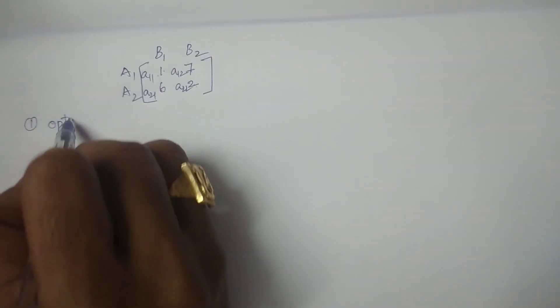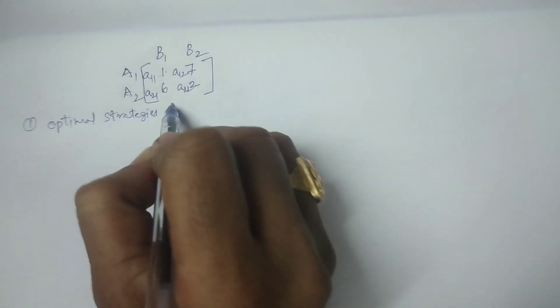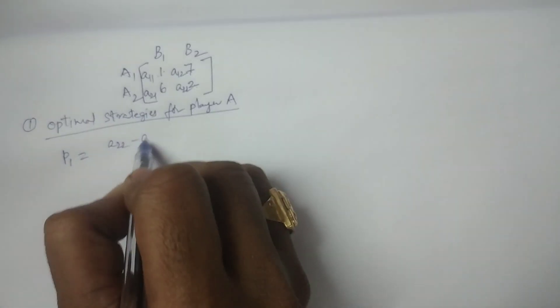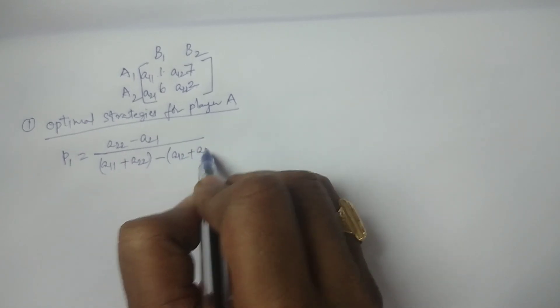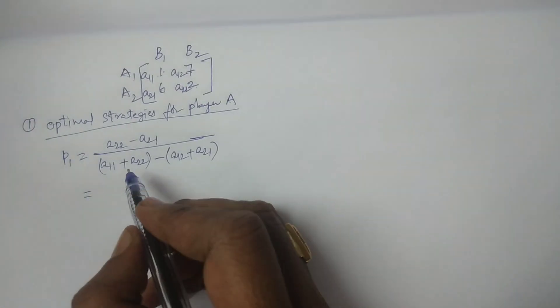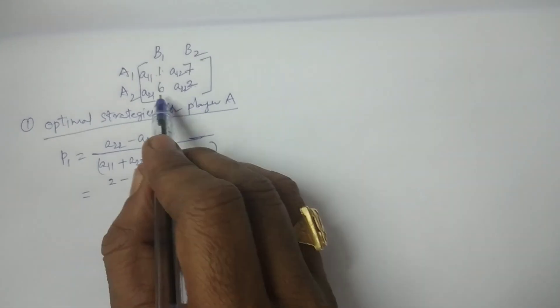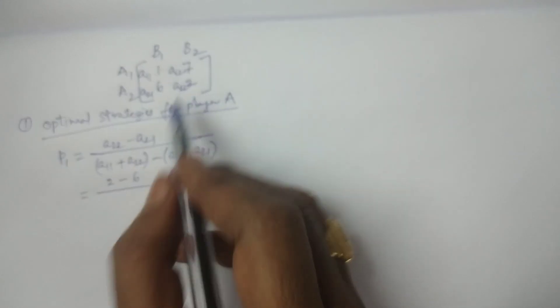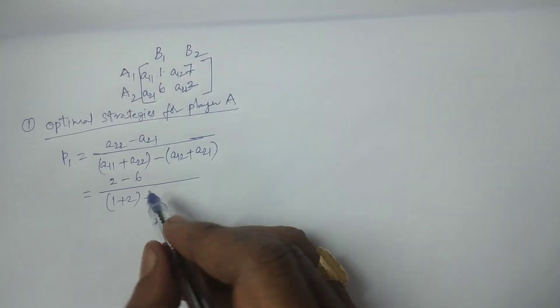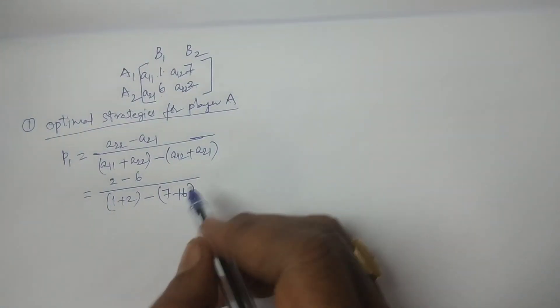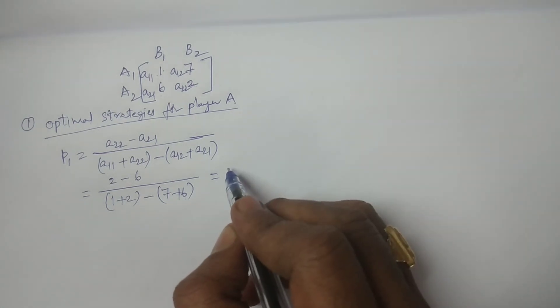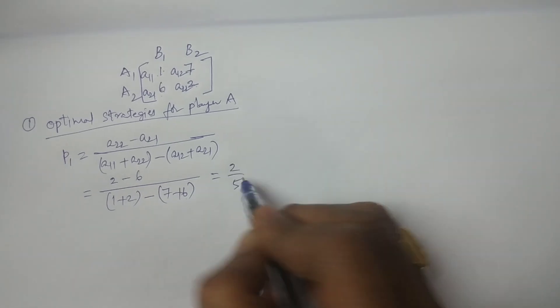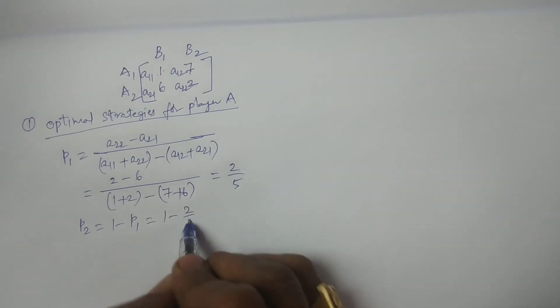First calculate the optimal strategies for player A. The formula for P1 is: (A22 minus A21) divided by (A11 plus A22 minus of A12 plus A21). This equals (2 minus 6) divided by (1 plus 2 minus of 7 plus 6), which is minus 4 divided by minus 10, giving 4 by 10, simplified to 2 by 5. Therefore P2 equals 1 minus P1, which is 1 minus 2 by 5, giving 3 by 5.